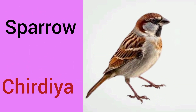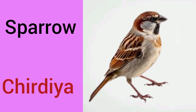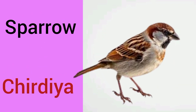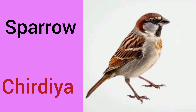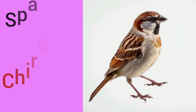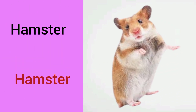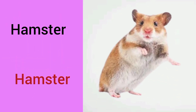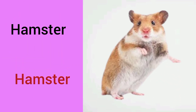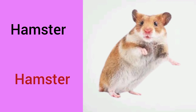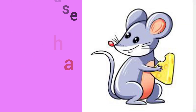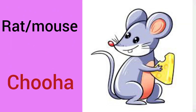Sparrow — Sparrow means Chiria. Hamster — Hamster means Hamster. Rat or Mouse means Chooha.